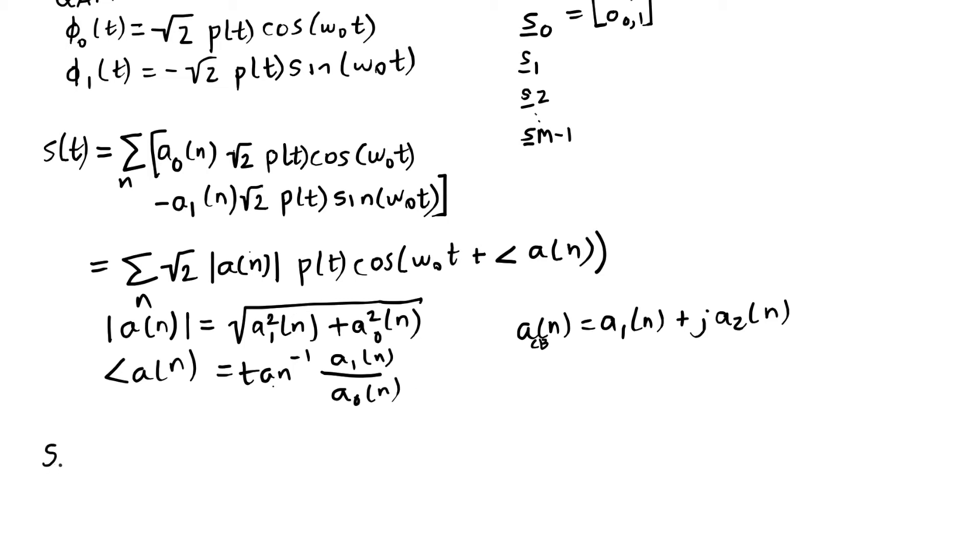I can write S of T again as square root of 2 I'll bring out, and I'm going to pull out the real part, and I'm going to pull out an E to the J omega naught T, and I'm going to multiply it by this complex baseband signal in time that I write then as follows.